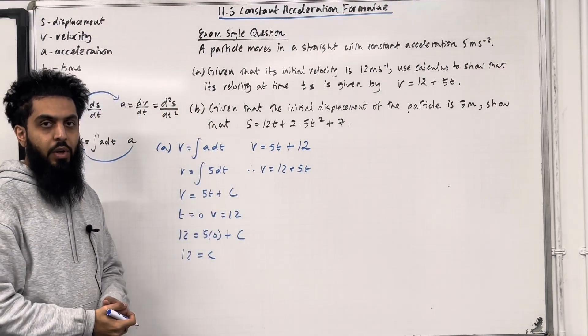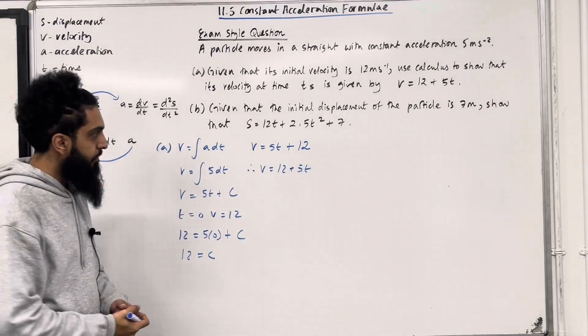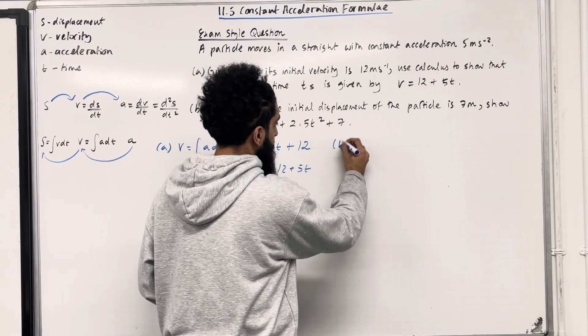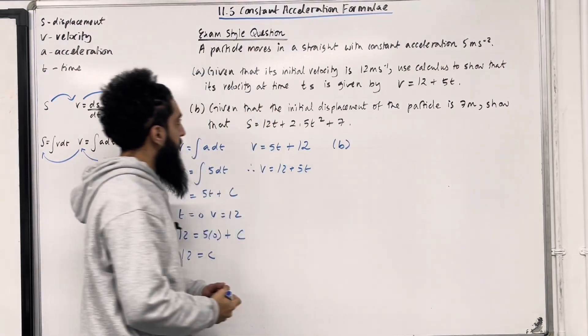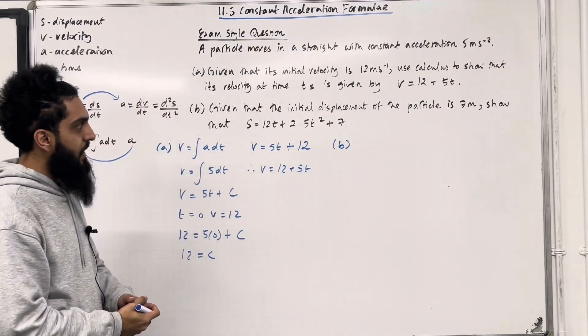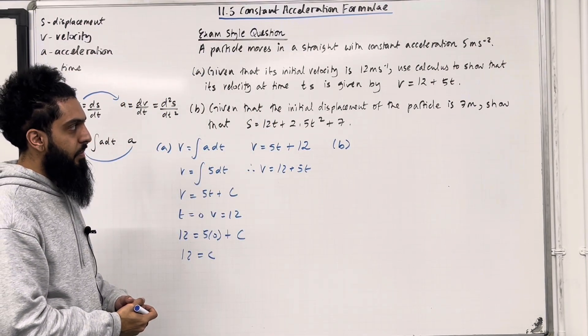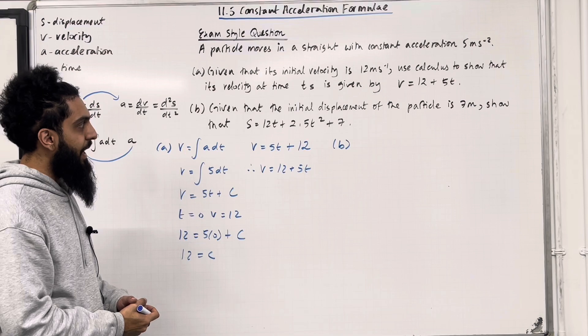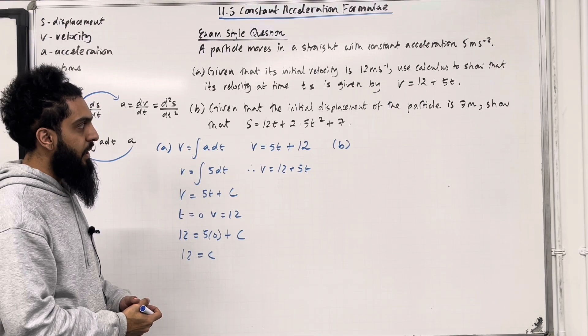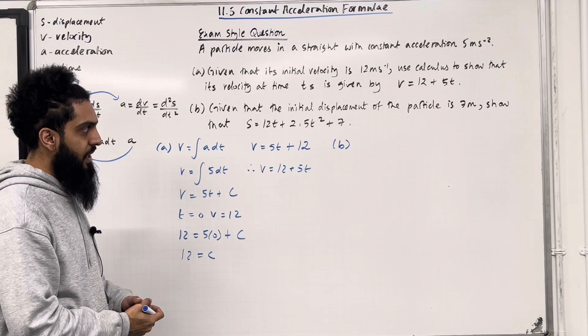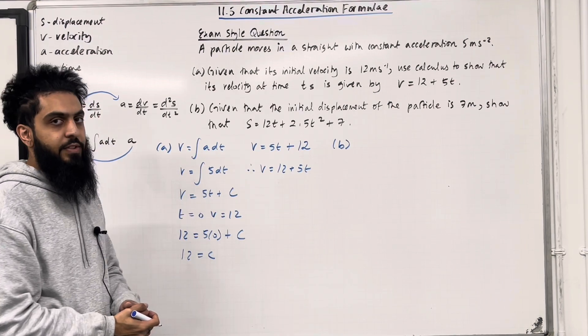Let's have a look at part B. In part B, given that the initial displacement of the particle is 7 meters, show that S = 12t + 2.5t² + 7.